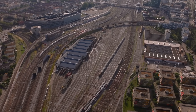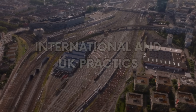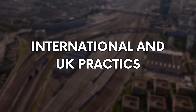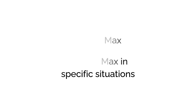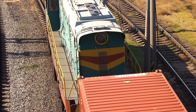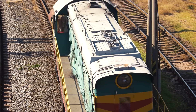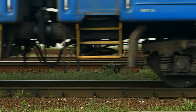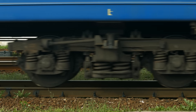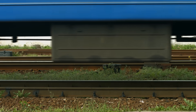So what do the standards say? In the UK, cant deficiency is typically limited to 110mm, with up to 150mm allowed in specific situations. France and Germany allow similar maximums. These limits depend on factors like rolling stock type, suspension design, and most importantly the track construction type. Stronger infrastructure can support higher cant deficiency levels.